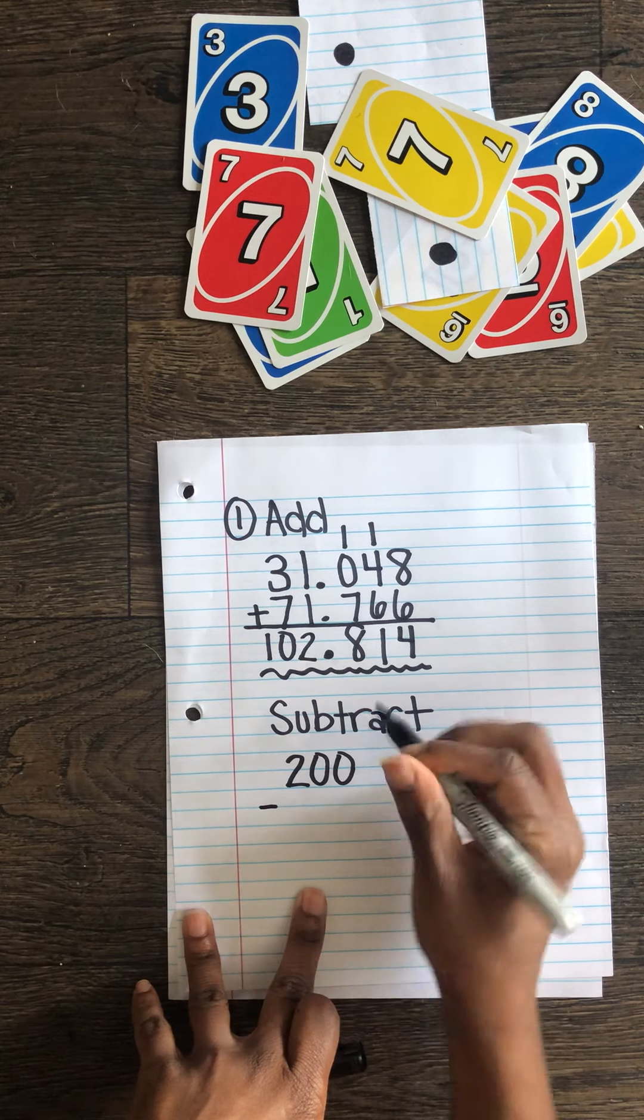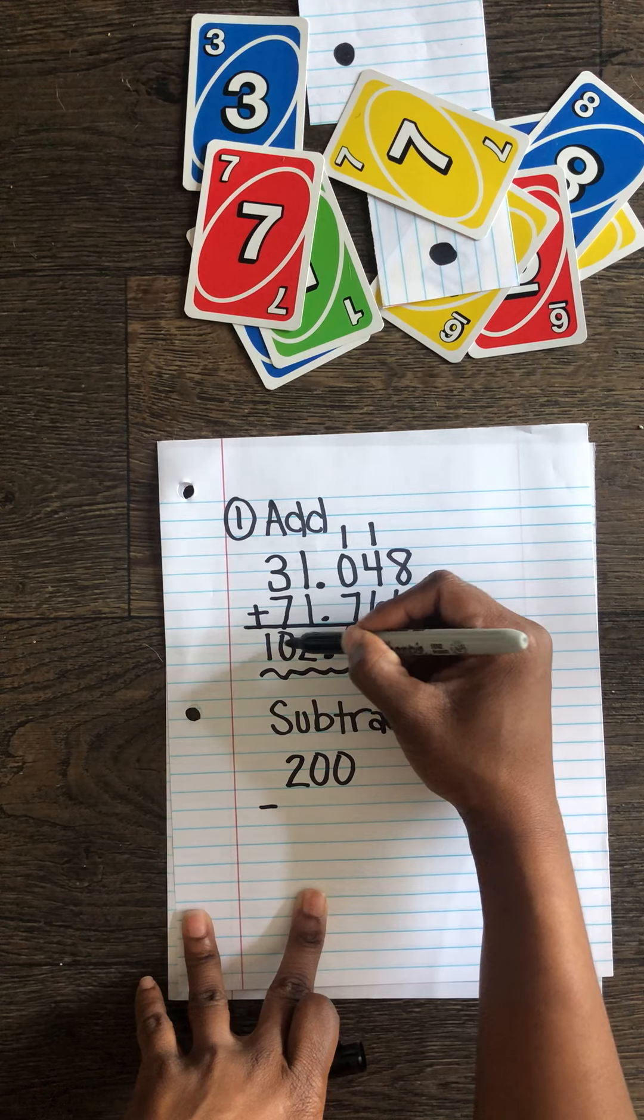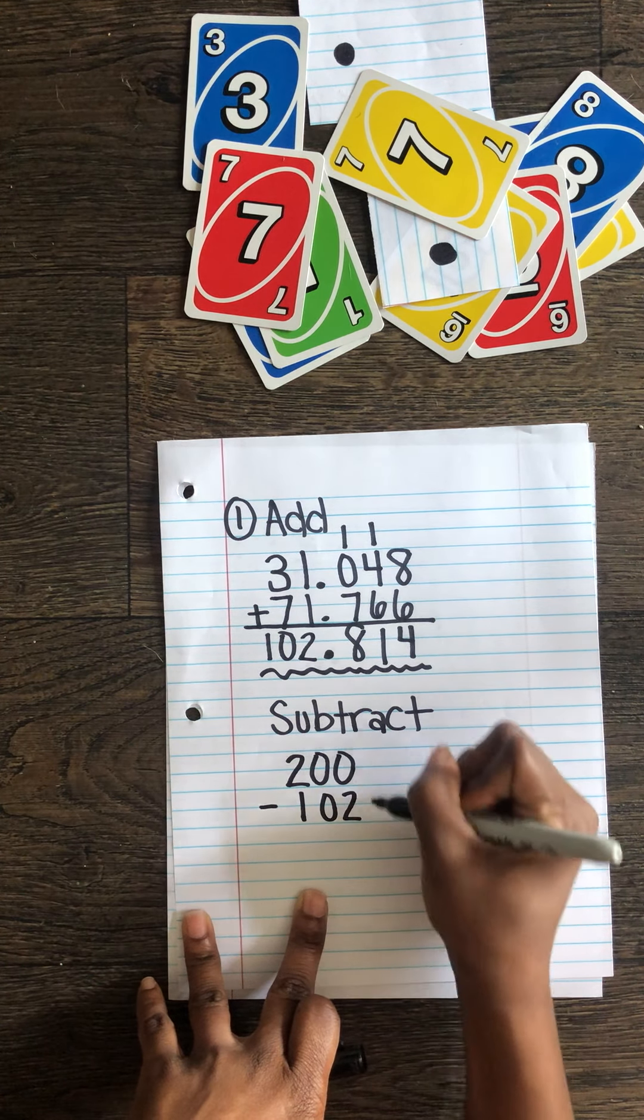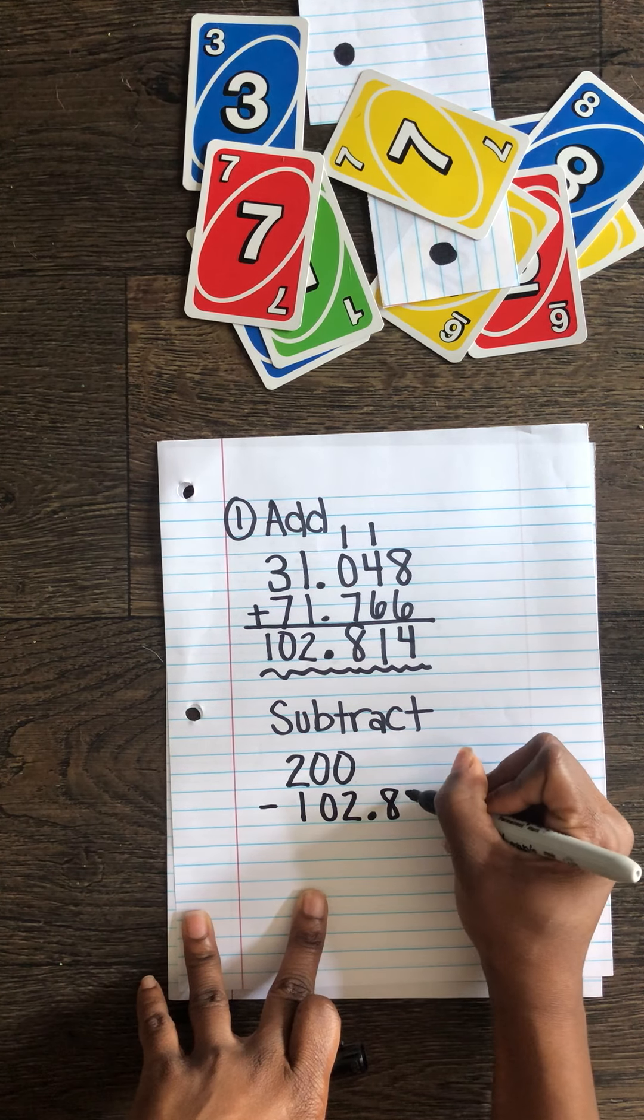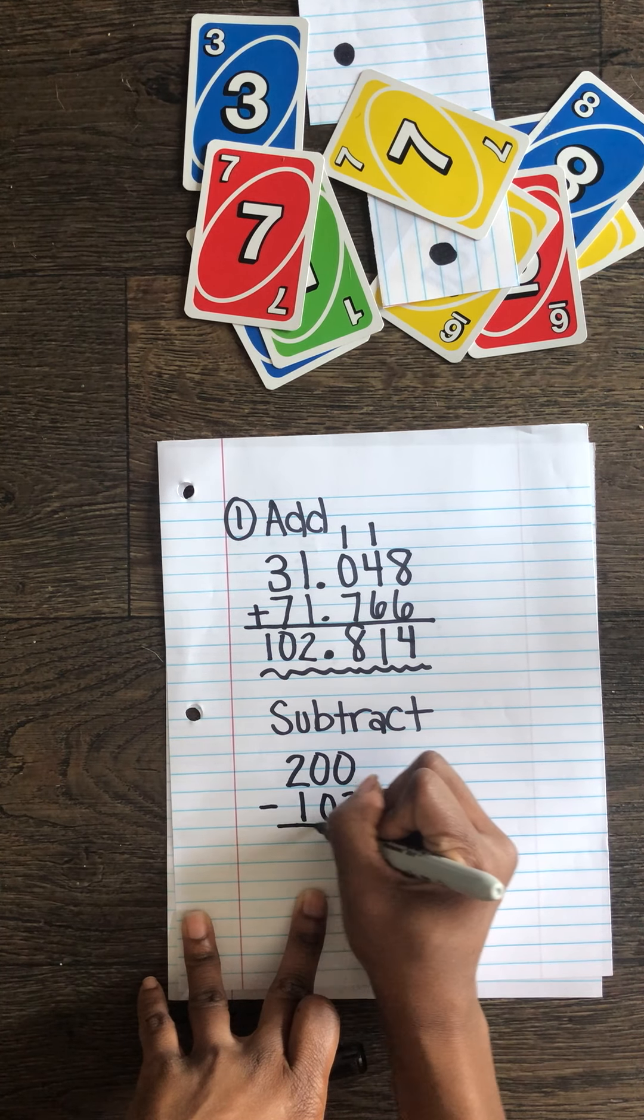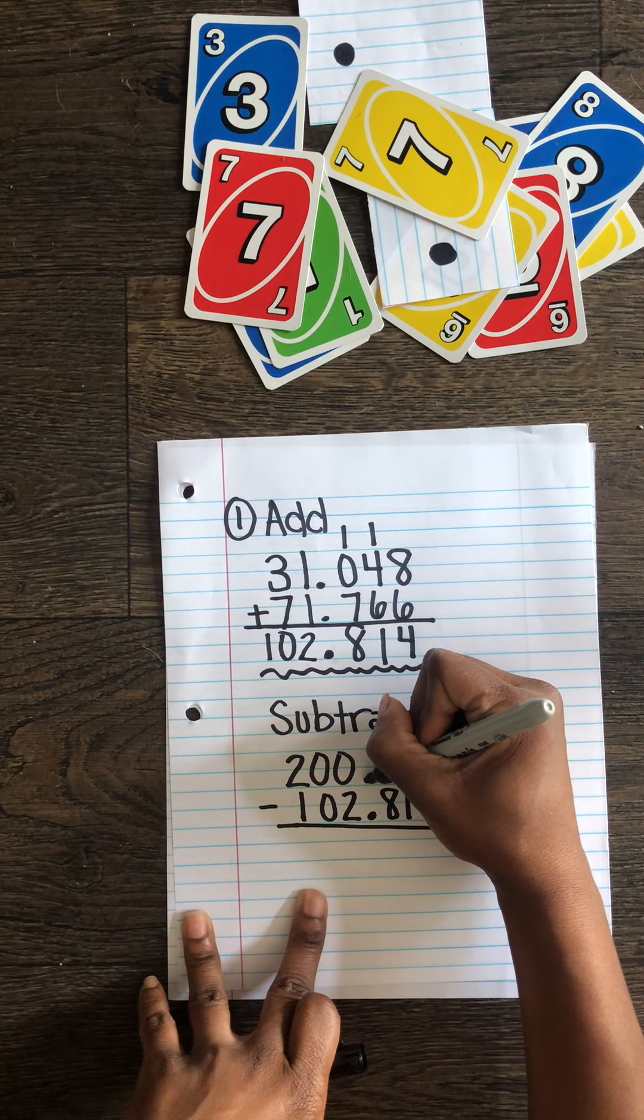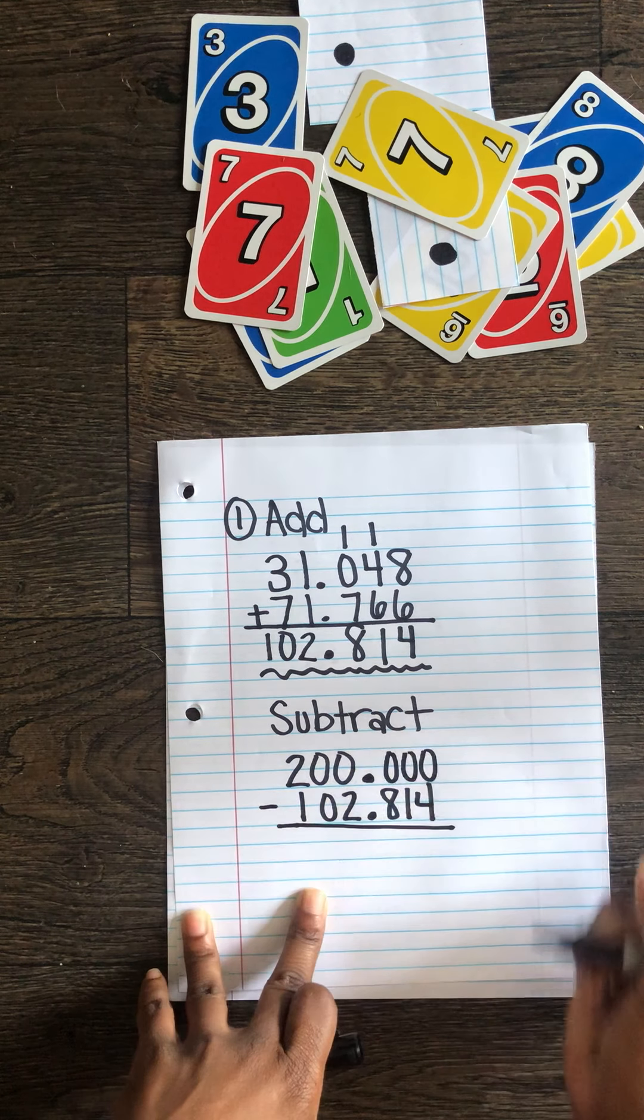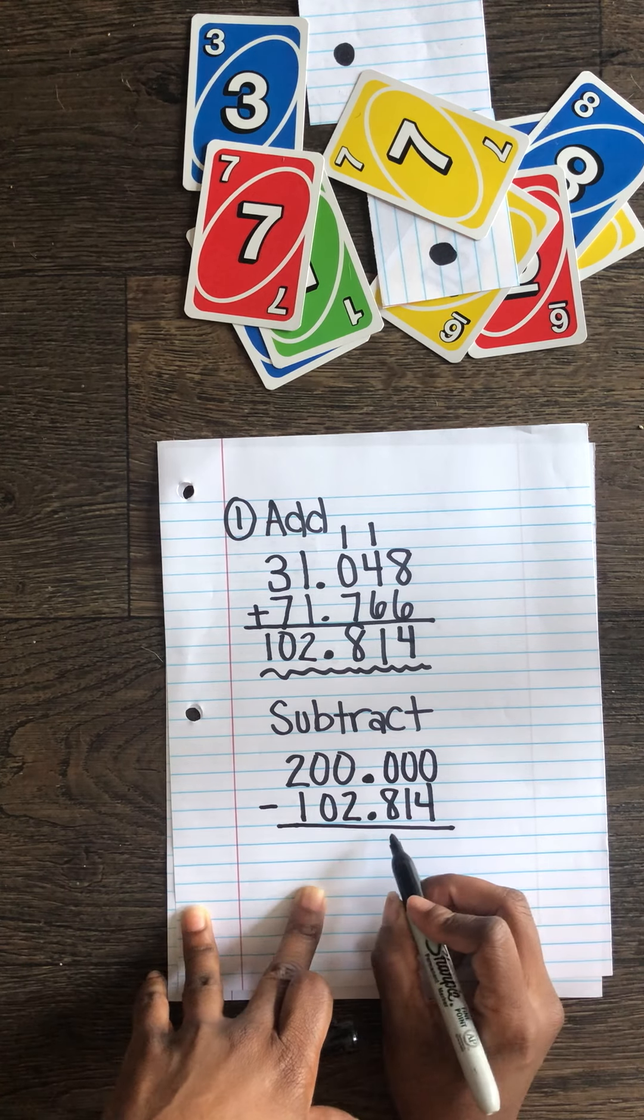Something to remember when we're lining these numbers up to make sure we line them up by place value. Because this is the hundredths place we want to line this up here. One hundred and two. And we want to put that decimal here. Eight hundred fourteen thousandths. In order to make this easier for us to subtract we want to place a decimal here and put these extra zeros here to help us subtract because they don't have value.